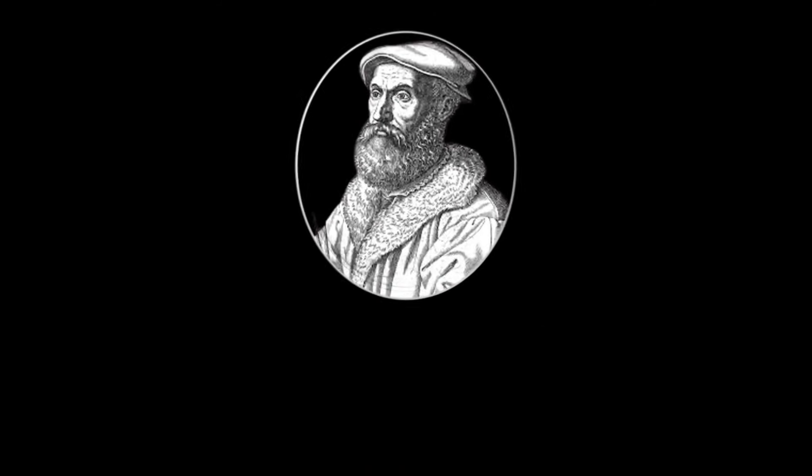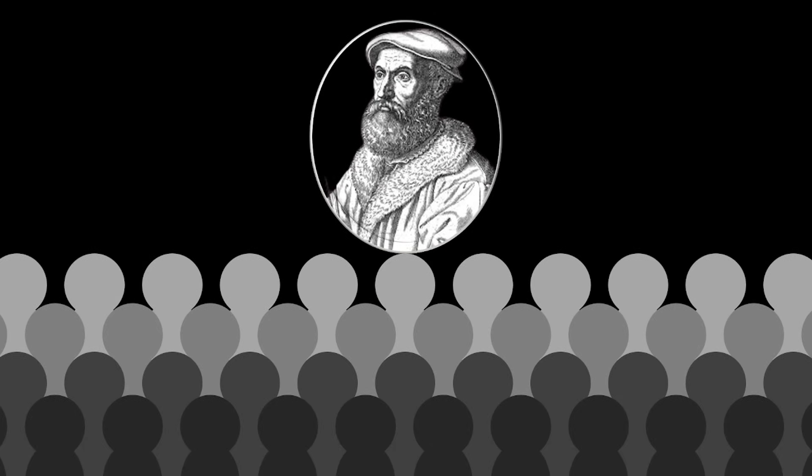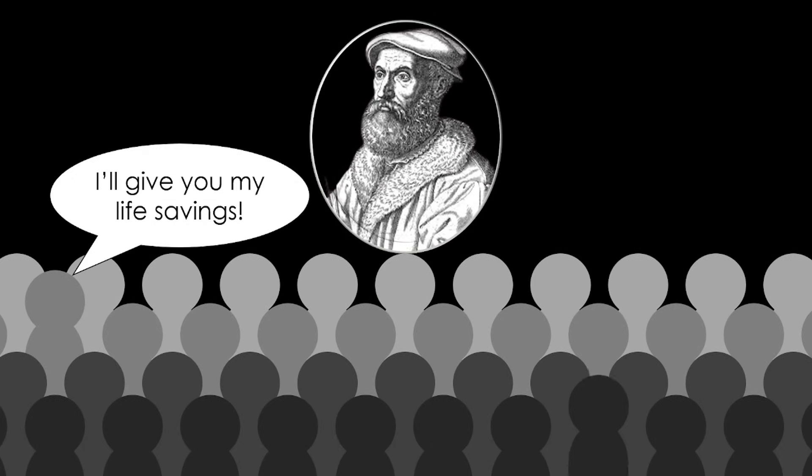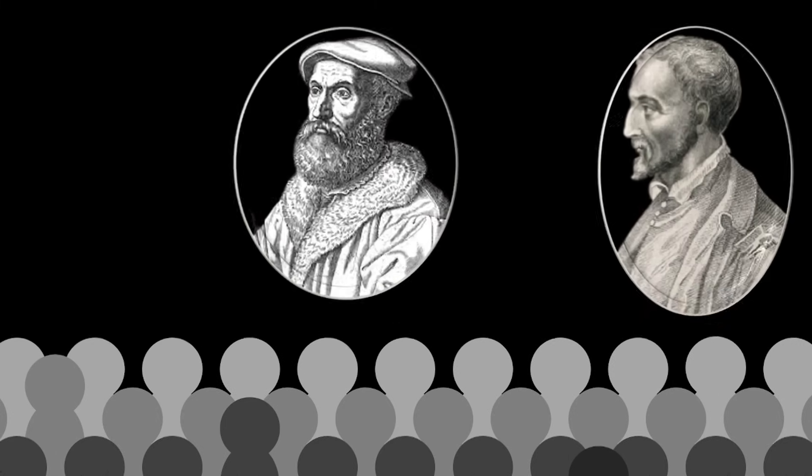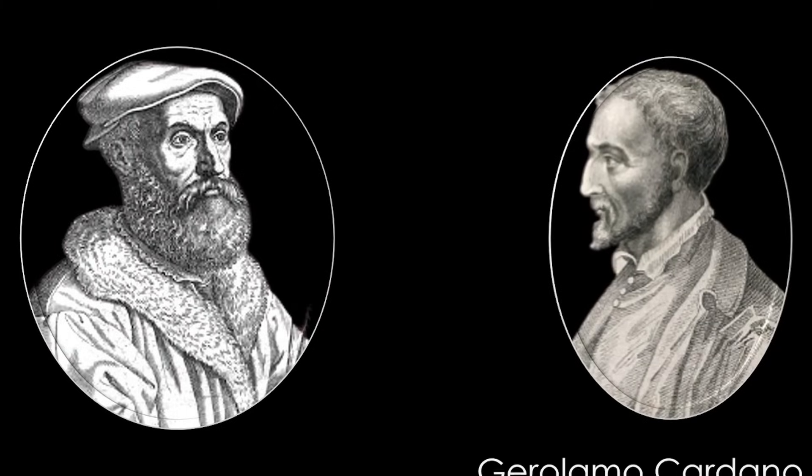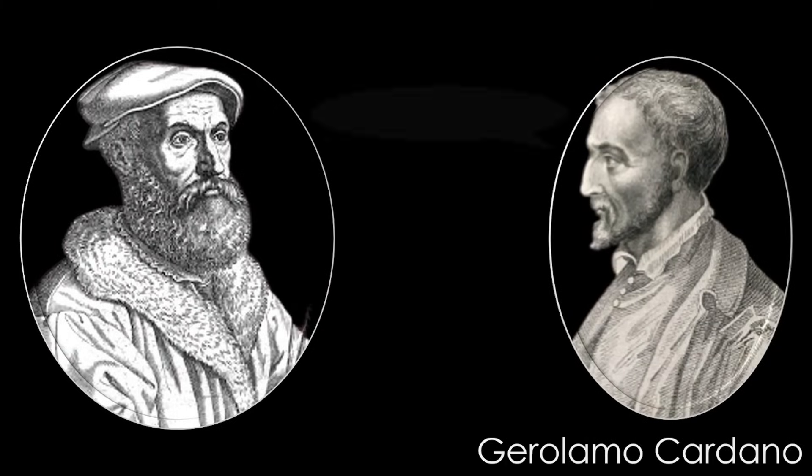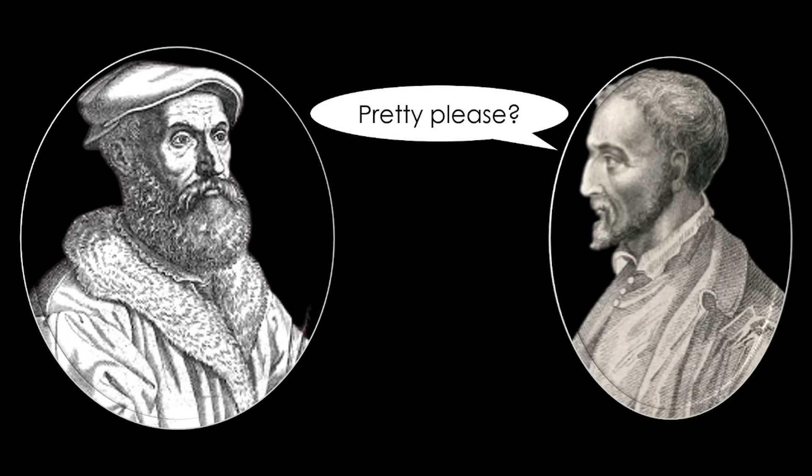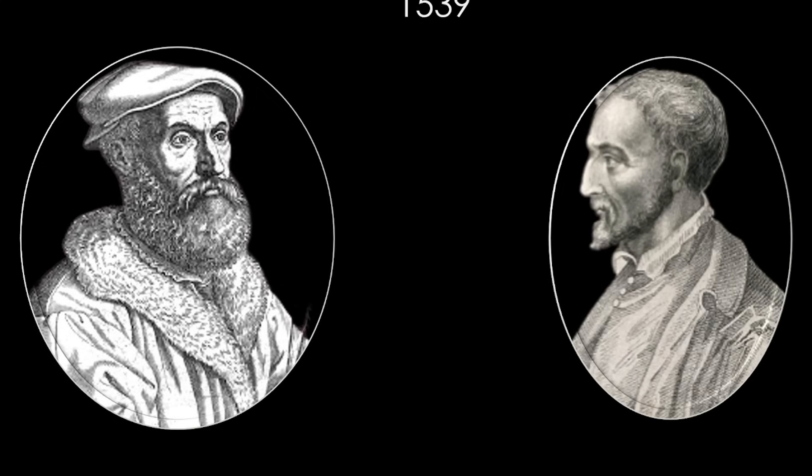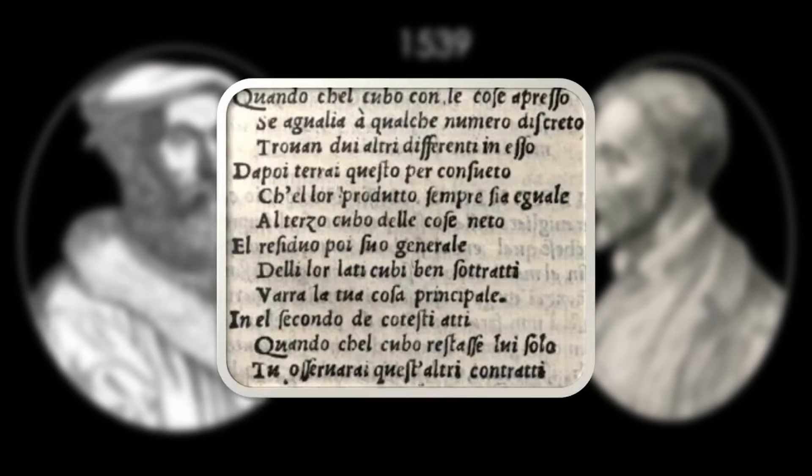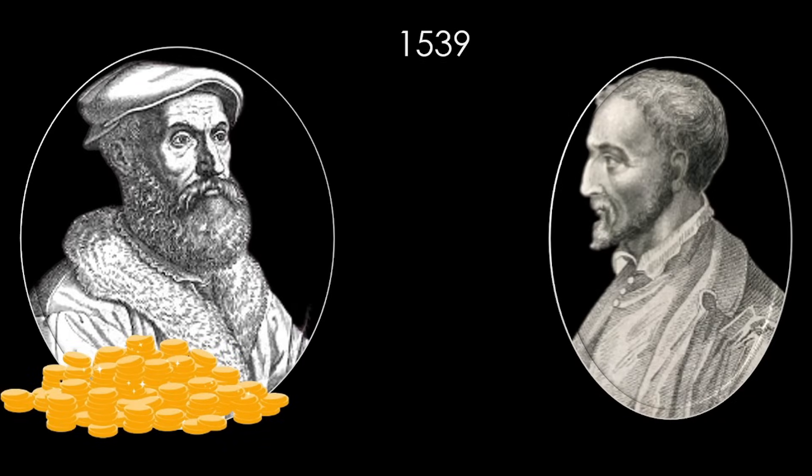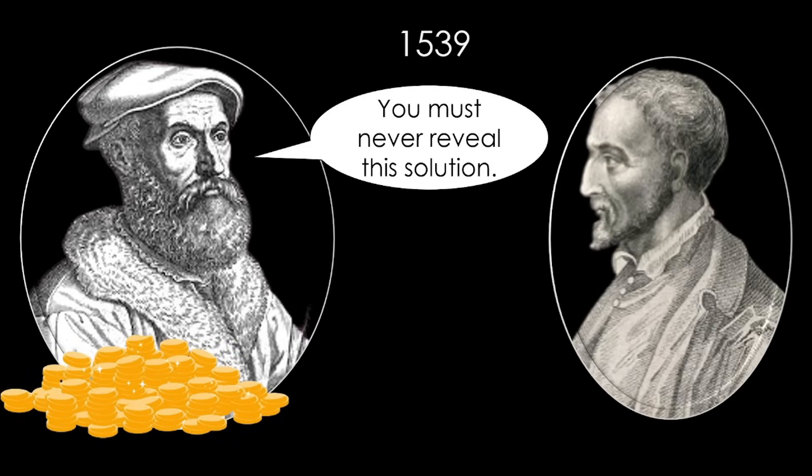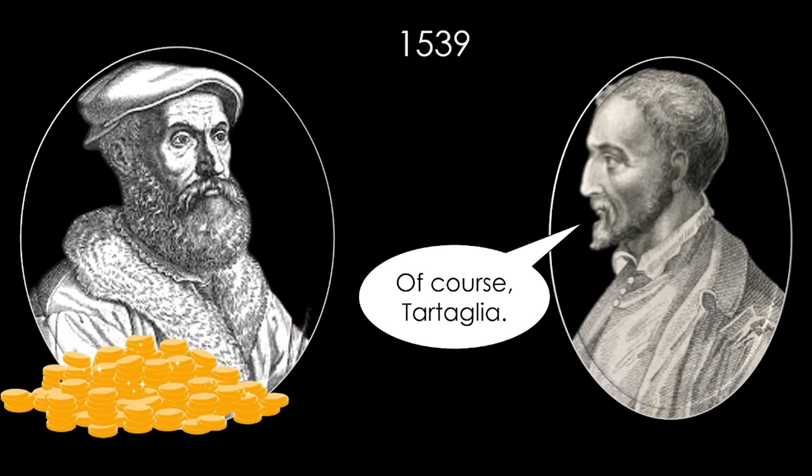When others learned of Tartaglia finding the solution for the depressed cubic, many tried coaxing it out of him, much to no avail, until one man would end up being able to persuade Tartaglia. Soon after the duel, a man named Gerolamo Cardano began imploring Tartaglia for the equation. After a few years, in 1539, Tartaglia finally caved and gave it to him in the form of a poem in return for a generous sum of money. However, he required Cardano to swear to secrecy, and promised to never reveal this equation, to which Cardano agreed.